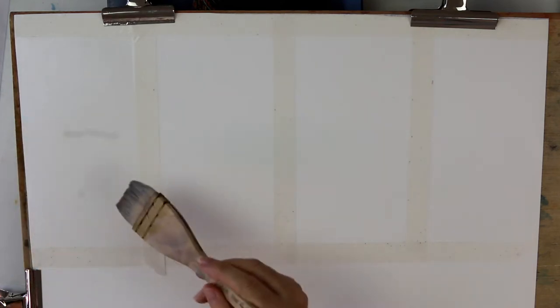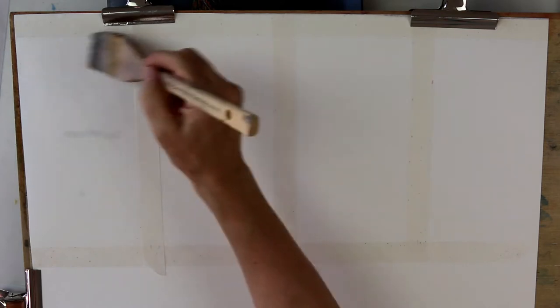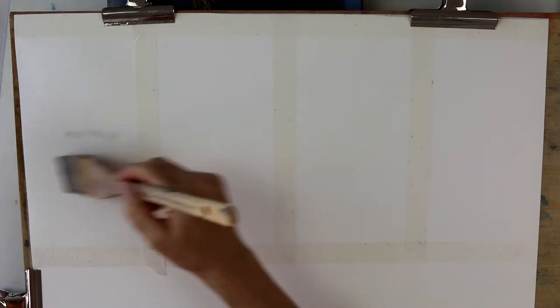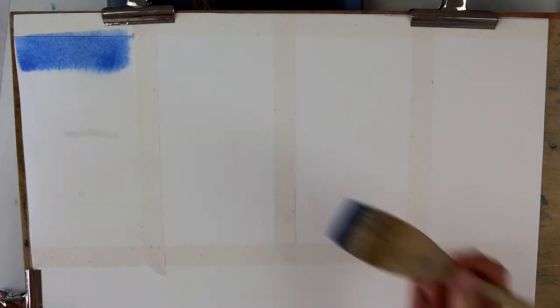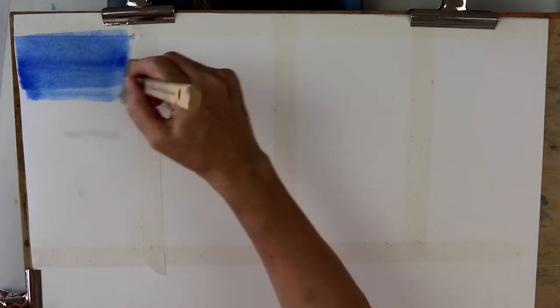You wet the paper, and I've already got all my colors mixed up. You wait for the real gloss to go off the paper, which in this heat is not going to take very long. Then you take some of your blue and start putting your wash on.